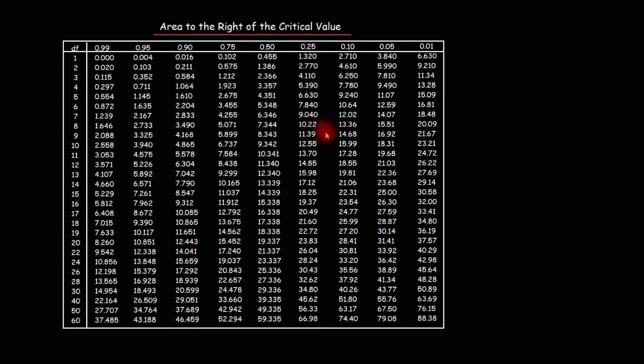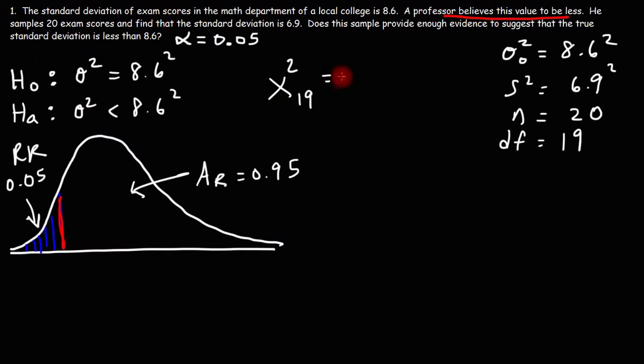Here we have the chi-square distribution table, and we said that we have 19 degrees of freedom, and the area to the right of the critical value is 0.95. This is the intersection value, so our critical chi-square value is 10.117. Let's go ahead and put that number on the graph.